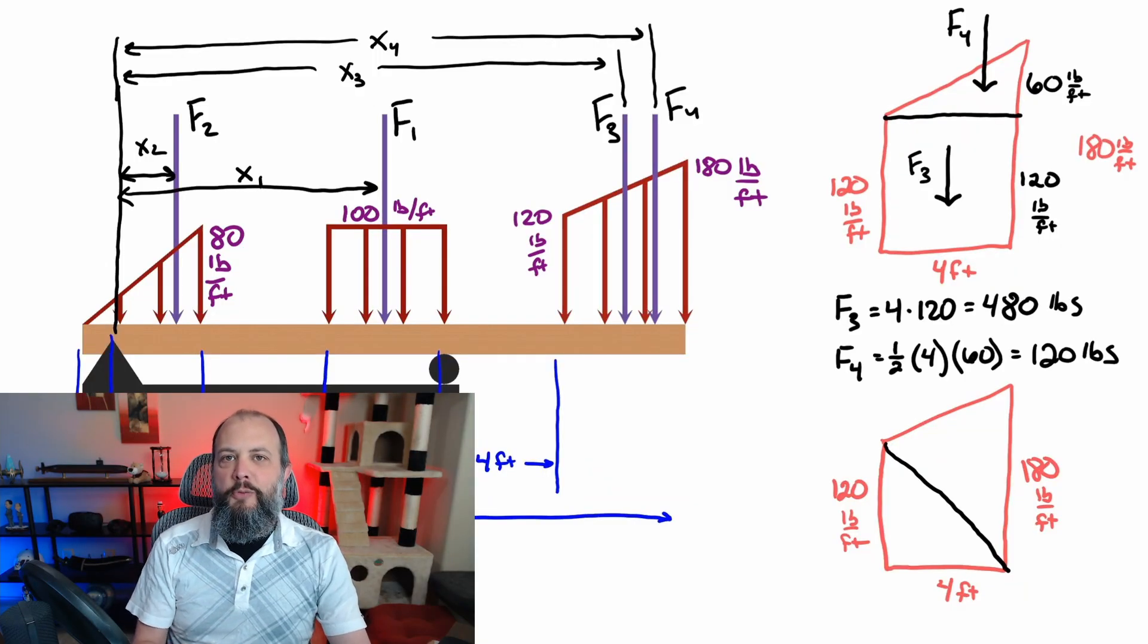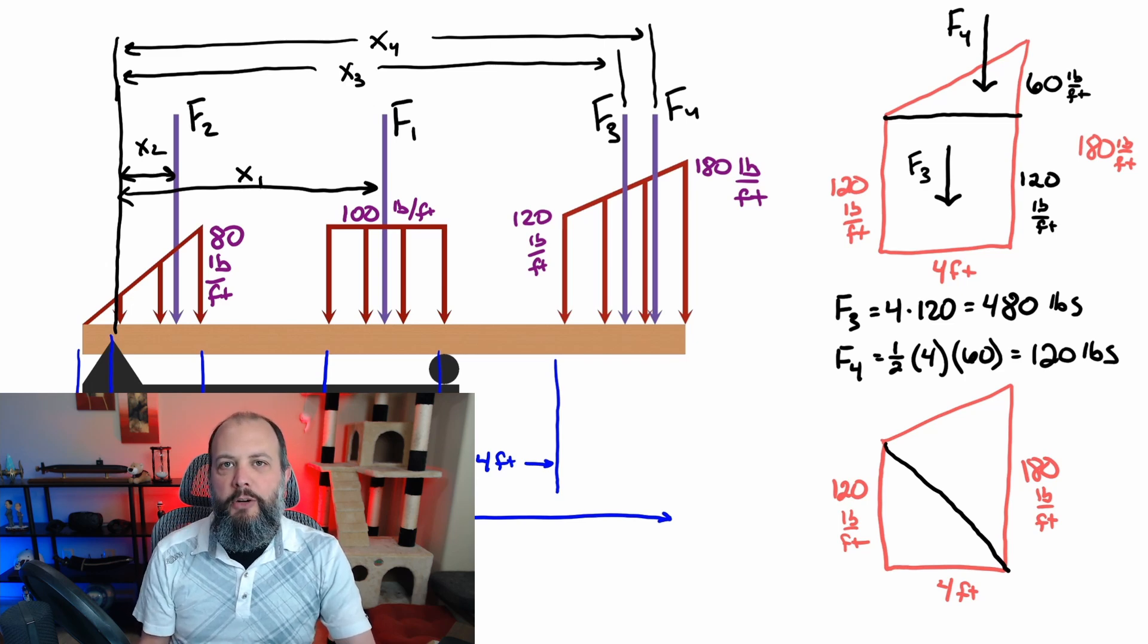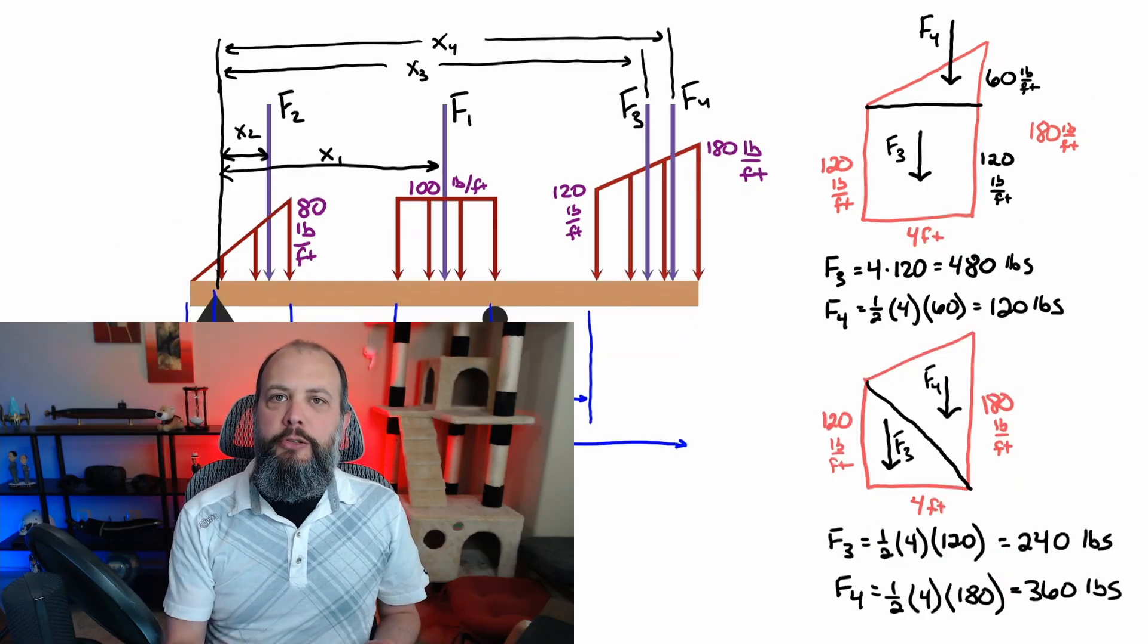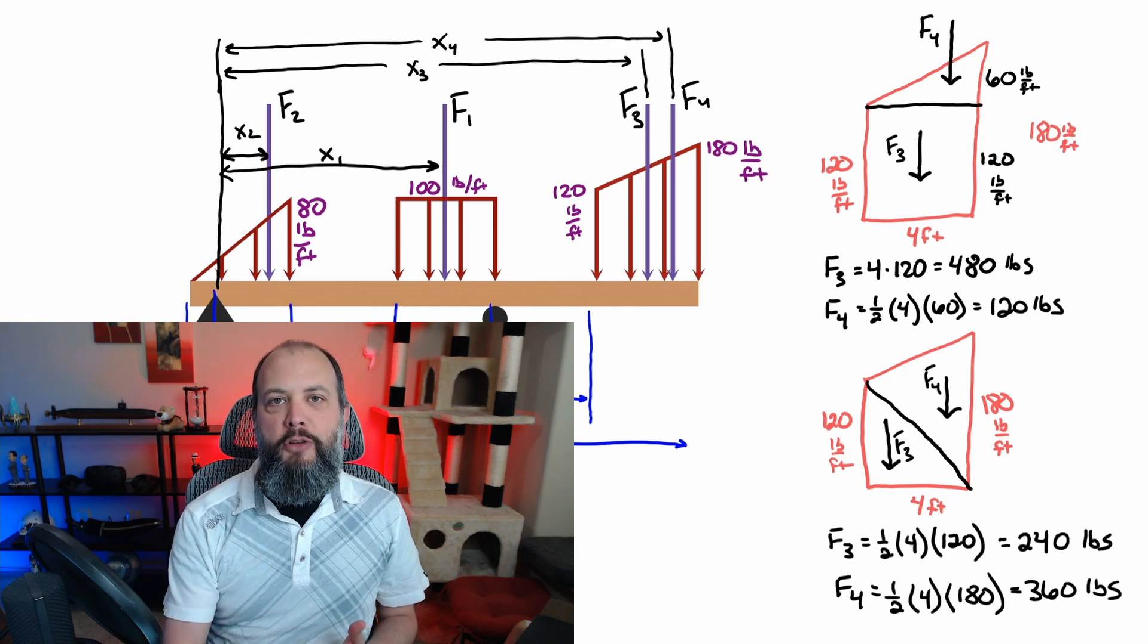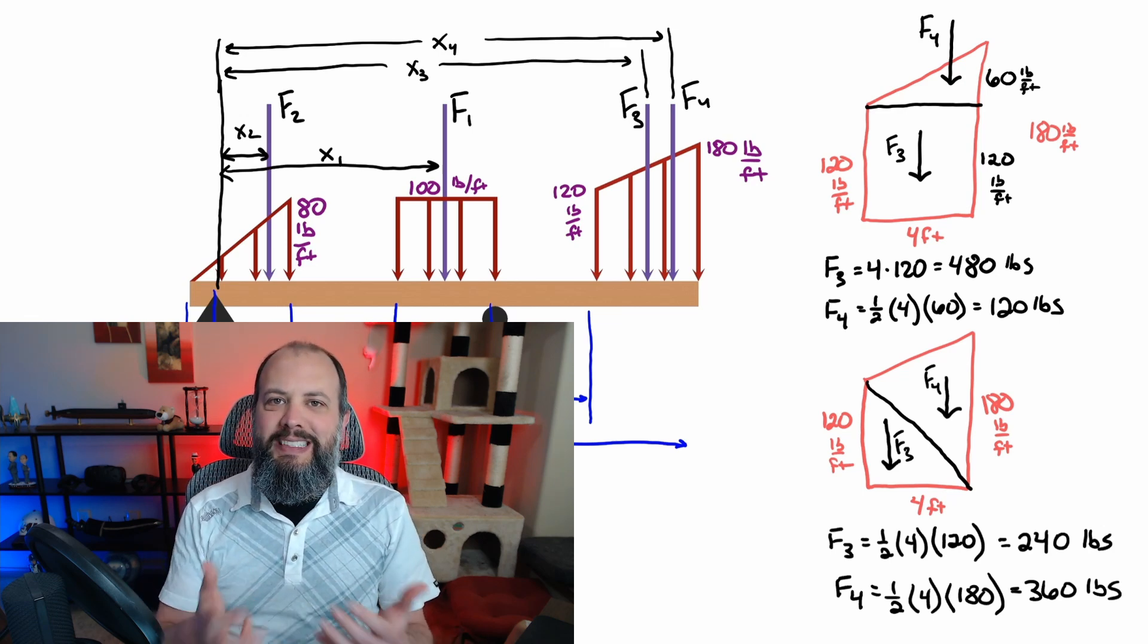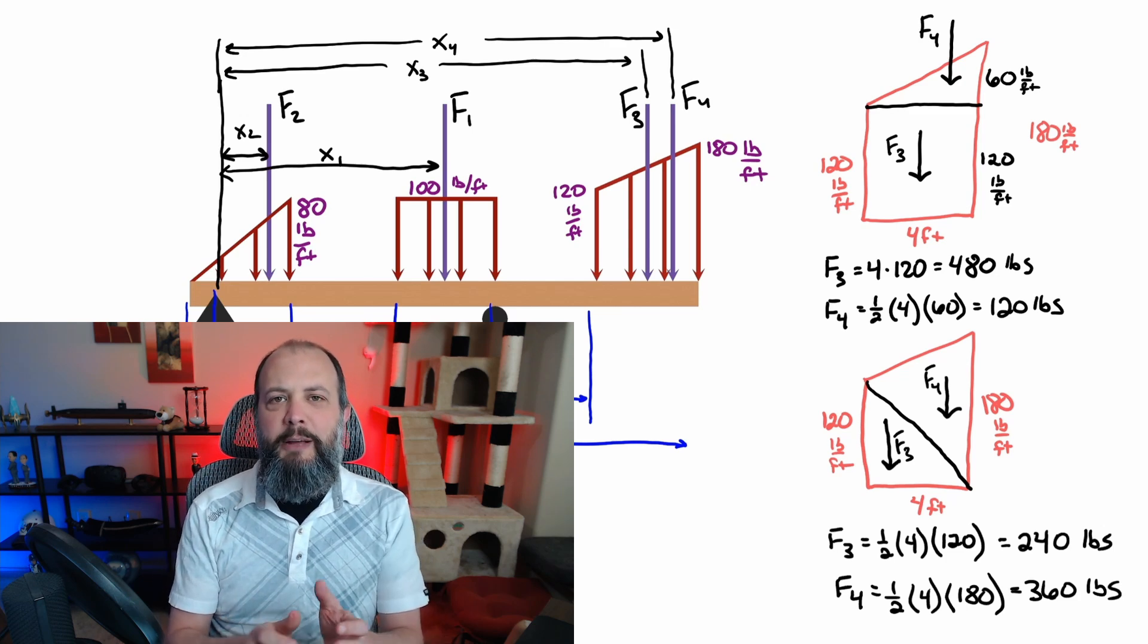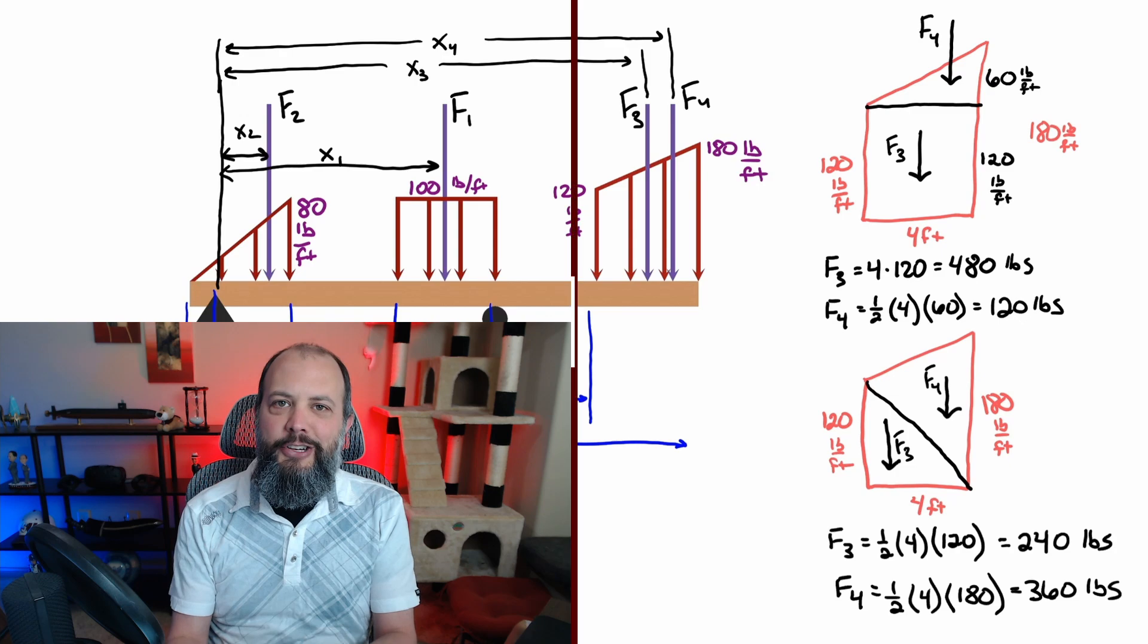For the rectangle and triangle method, you get forces of 480 and 120 pounds. And splitting the shape into two triangles, you get forces of 240 pounds and 360 pounds. So either method, you still get 600 pounds of total force. But since the values are a little bit different, they end up located in slightly different locations.